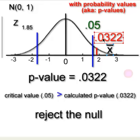So the p-value, 0.0322, is less than the cutoff value, the critical value, 0.05. So we would reject the null.